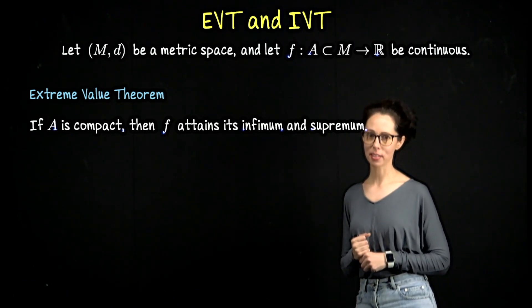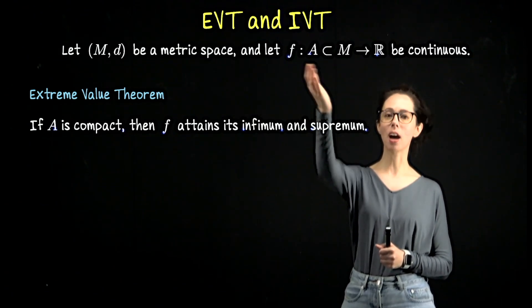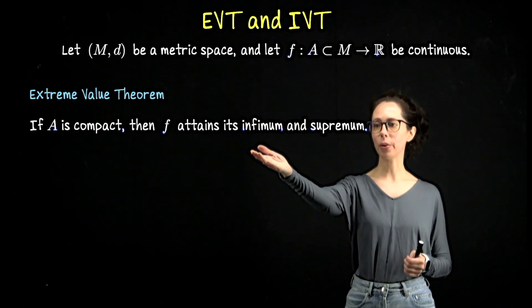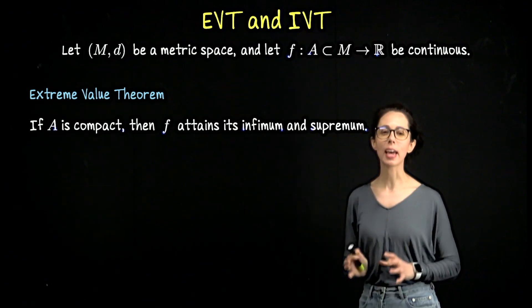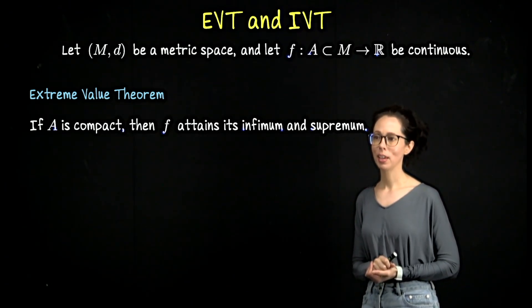The Extreme Value Theorem tells us that a real valued function which is continuous on a compact domain attains an infimum value and a supremum value. Here we're talking about the infimum and supremum for the set of outputs, the range of A.